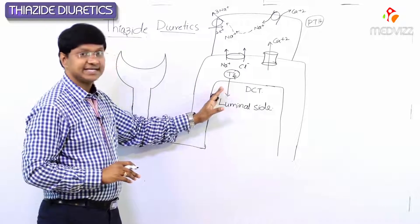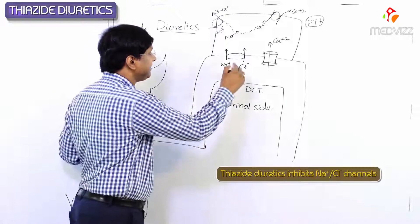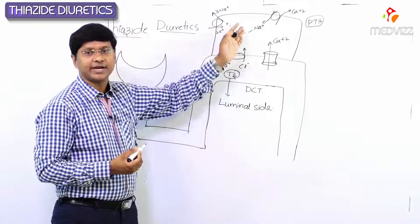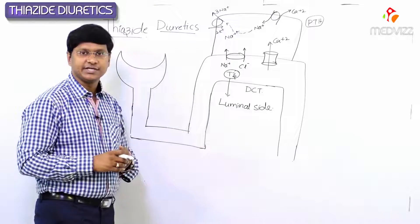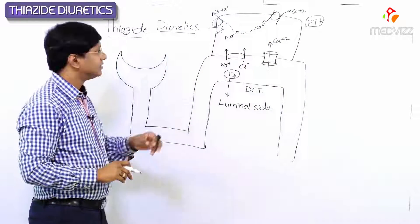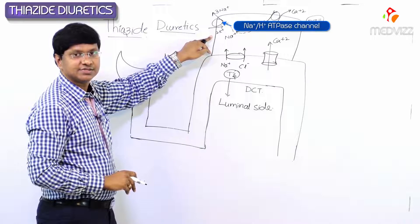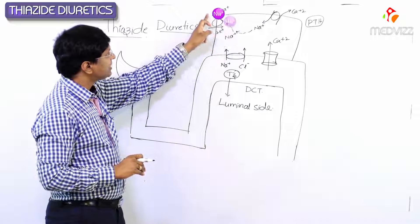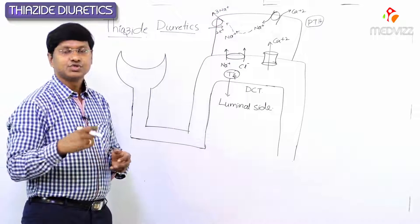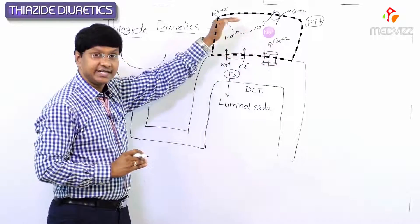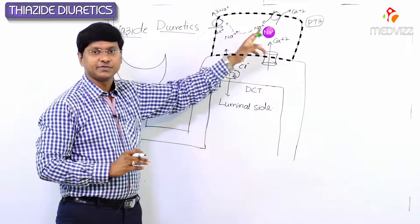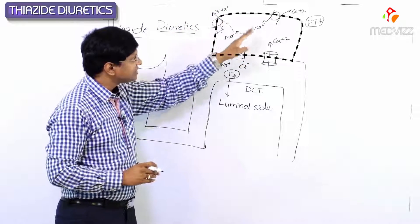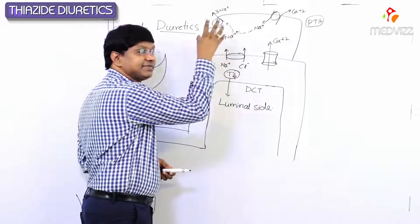These thiazide diuretics will inhibit this particular sodium chloride channel. Now the question is: why is sodium and chloride reabsorbed in a normal cell? In the cell, we have sodium-potassium ATPase channels. These channels take three sodiums out and two potassiums in. Thereby the cell becomes deficient of sodium — because through the sodium-potassium ATPase channel, three sodiums are moving out.